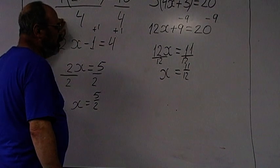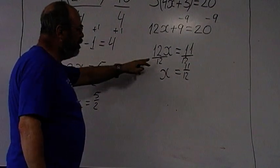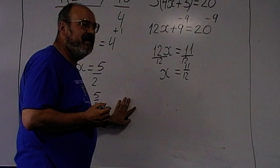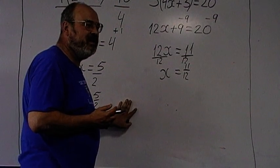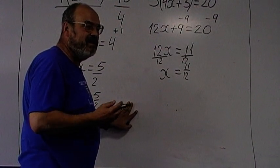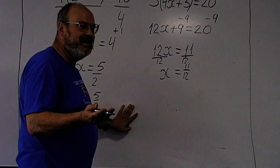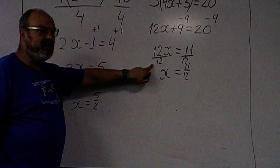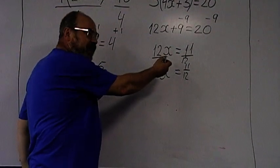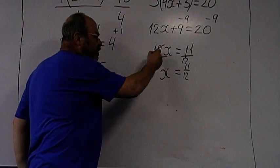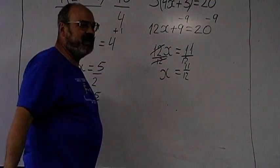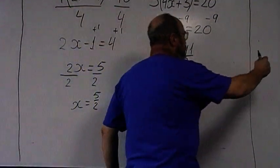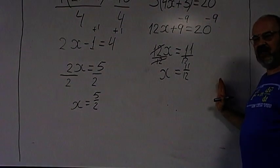A student asked: why do we divide by 12? We want x by itself, so 12 divided by 12 cancels out to 1. That's why we divide both sides by 12.